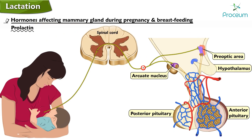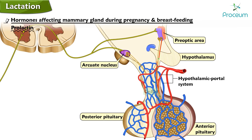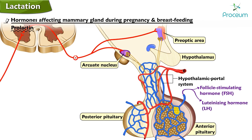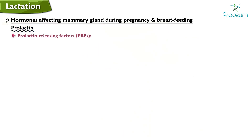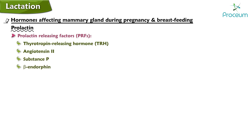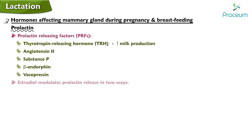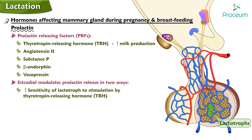Fourth, in the pre-optic area and arcuate nucleus, afferent input from the nipple inhibits GnRH release. GnRH normally travels via the hypothalamic portal system to the anterior pituitary where it stimulates synthesis and release of FSH and LH; thus, inhibiting GnRH release inhibits FSH and LH release, thereby inhibiting the ovarian cycle. Several factors act as prolactin releasing factors: thyrotropin-releasing hormone, angiotensin II, substance P, beta-endorphin, and vasopressin. Estradiol modulates prolactin release by increasing lactotroph sensitivity to TRH and decreasing its sensitivity to dopamine inhibition.